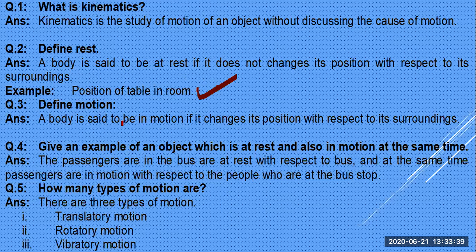Motion: a body is in the state of motion if it changes its position with respect to its surroundings. Example of rest and motion simultaneously: passengers in a bus are at rest with respect to the bus, but in motion with respect to people standing outside the bus.